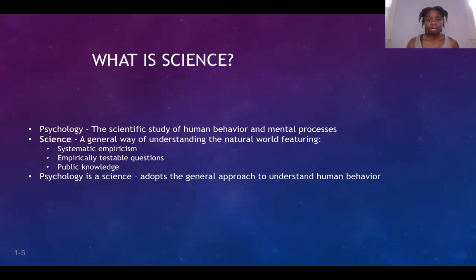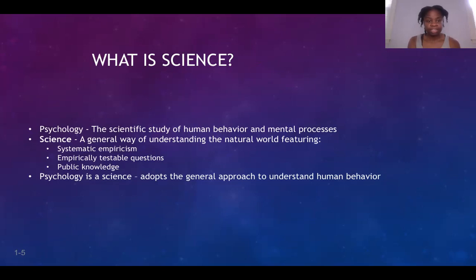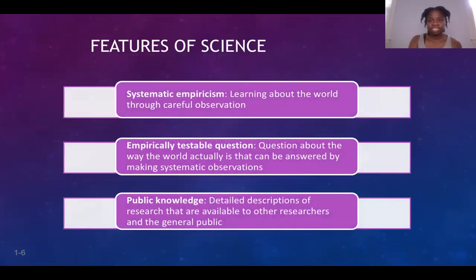The general scientific approach is what makes psychology a science. It has three functions: systematic empiricism, empirically testable questions, and public knowledge. The first — systematic empiricism — is learning based on observation. Scientists learn about the natural world by carefully planning, making recordings, and analyzing observations of those recordings.